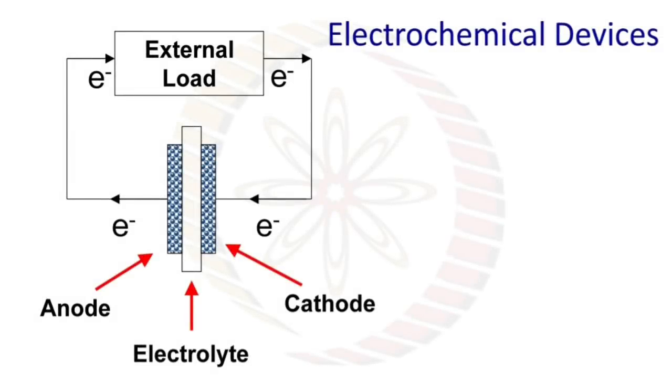In electrochemical devices, there is one anode, one cathode, and an electrolyte between them.